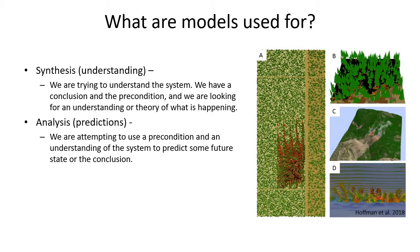Thus far in class we've focused on using simple fire spread models to make predictions about some future outcome. But there are other model uses - one big one is synthesis or understanding, where we use a model to better understand how our system is behaving. Particularly, how strongly is the outcome dependent on particular starting conditions or parameters that the model is sensitive to? This can give us deeper understanding of how the system actually works - a major use we haven't touched much on, since we've been focused on making specific predictions about potential fire behavior.